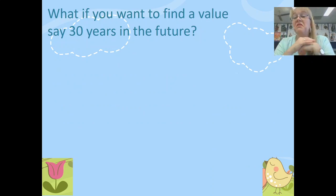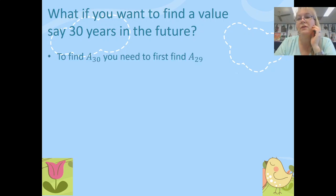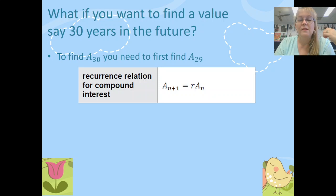Now what if you wanted to find a value, say, 30 years into the future? Well, the problem that we experience is that a geometric sequence or recurrence relation only helps us to find the next value. So if I wanted to find A_30, I would first need to find A_29. And that would mean I'd have to go through that iterative process, especially if it was compounded monthly, 12 times 29 times to get there. We don't really want to do that. So this recurrence relation for a compound interest formula does not really help us to find values a long way into the future. It really only helps us to find the first few elements or first few terms of a compound interest recurrence relation in a geometric sequence.